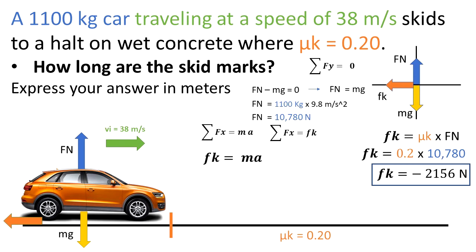It is negative because from the diagram, we know that the direction of the kinetic friction is to the left. And we have that the left is negative by convention.